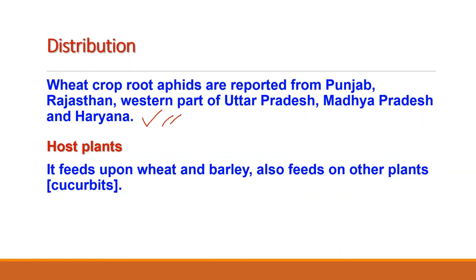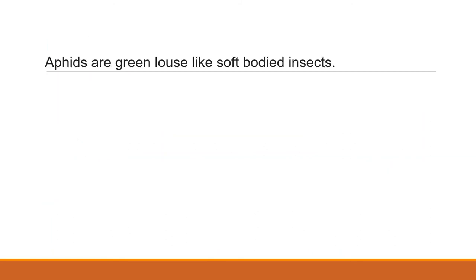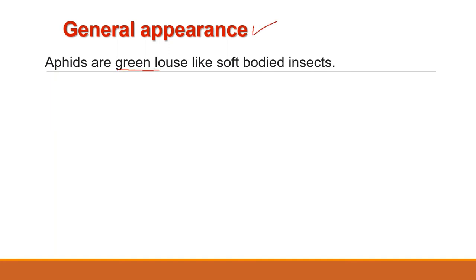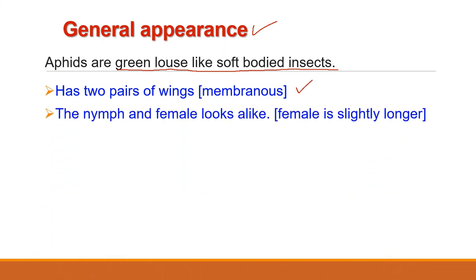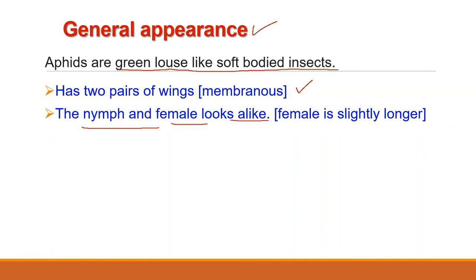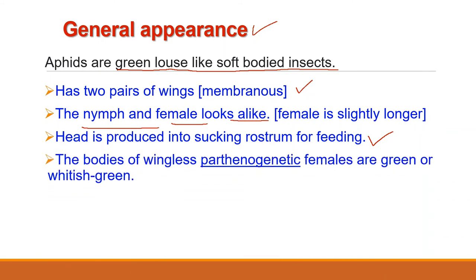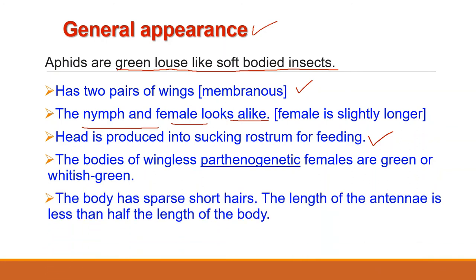The host plants are wheat and barley. They also feed on soft leaves of other plants like cucurbits. Aphids are green, louse-like soft-bodied insects with both pairs of wings membranous, though some species without wings are also found. The nymph and the female look alike except that the females are longer. Their winged forms appear only in early summers. Their heads are produced into a sucking rostrum for feeding on plant sap. The wingless parthenogenetic females are green or whitish-green in color with thin short hairs and antennae less than half the length of the body.